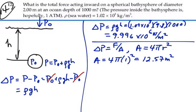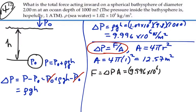So from this formula here, the force is going to equal the change in pressure times the area, which is going to be 9.996 times 10 to the 6 times 12.57. And that's equal to 1.26 times 10 to the 8 newtons.